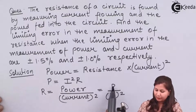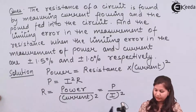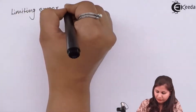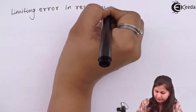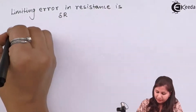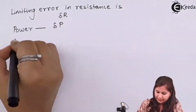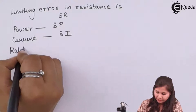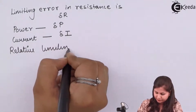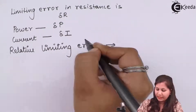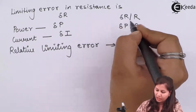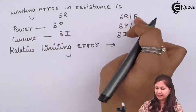Now if the limiting error in power and current is given to us, we can find out the limiting error in resistance also. The limiting error in resistance is δR, the limiting error in power is δP, and in current the limiting error is δI. If we are taking the relative limiting error, we divide by the true value: so δR/R, δP/P, and δI/I are the relative limiting errors in resistance, power, and current respectively.